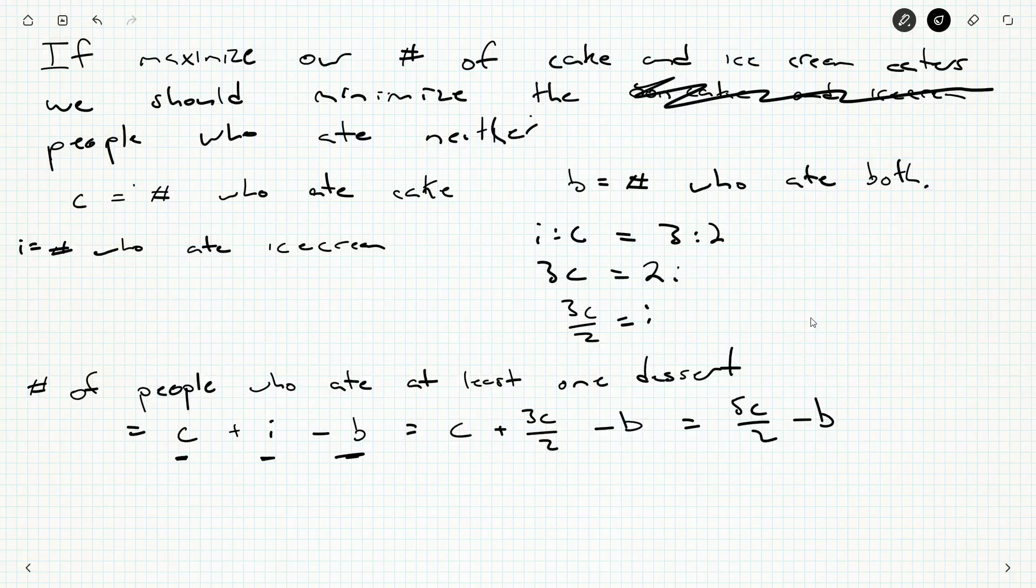Now, the number of people who ate at least one dessert, I want to make this, this can't be more than 120, but I'd really like it to be 120. And I want to make B as big as possible. That's the goal. I'm wondering if we could sort of assume that B and C are equal. Obviously, B has to be less than or equal to C, because if you ate both cake and ice cream, then you had to have eaten cake. So, could we say B is equal to C?